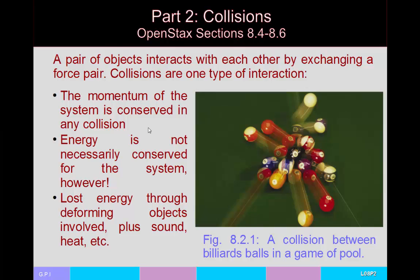The idea is that you have a pair of objects which can interact with each other by exchanging a force pair. It's a force pair because of Newton's third law. If ball number one exchanges a force with ball number two, then ball number two also exchanges a force with ball number one — equal magnitude, opposite direction. The end result is that momentum is going to be conserved in a system.